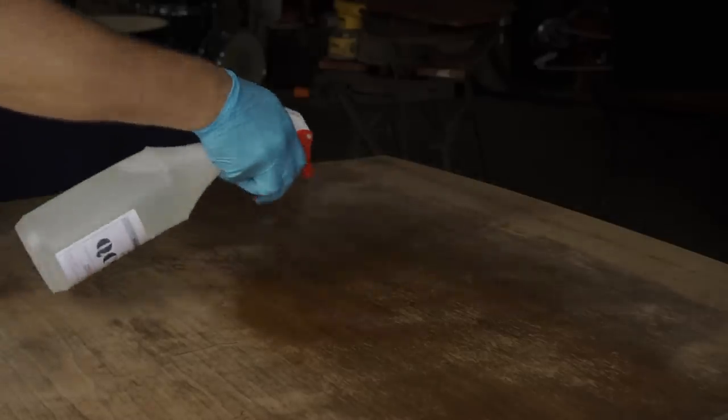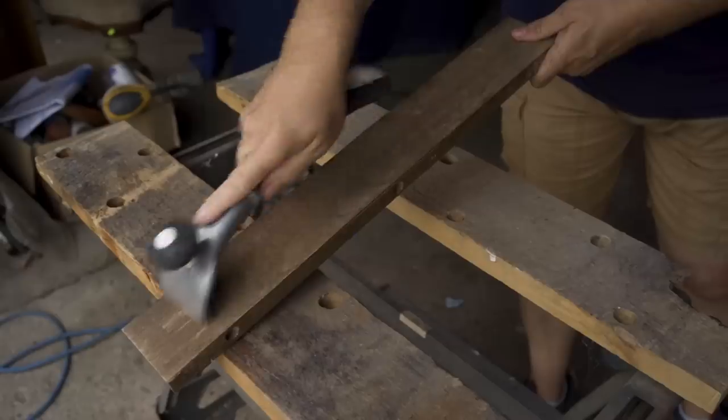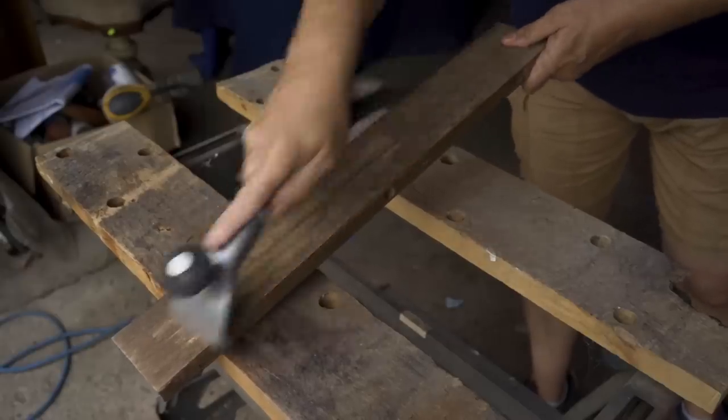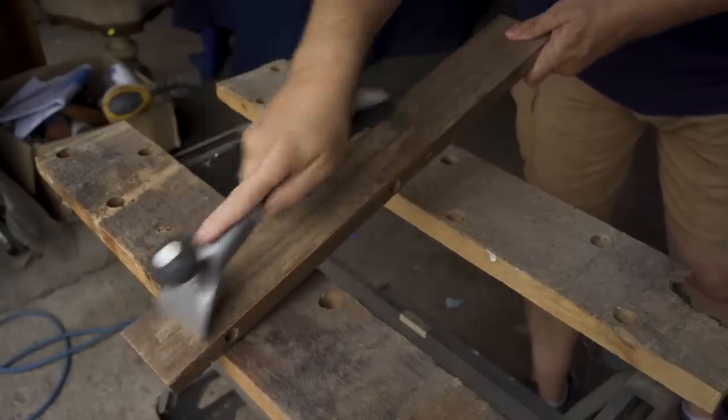Next, it was time to remove the finish, or what was left of it. I used a stripper on most of the table, this is QCS by Strip Weld, and this didn't take long at all because there was barely any finish left. On the aprons, I just scraped it off because it was practically falling off on its own anyway.